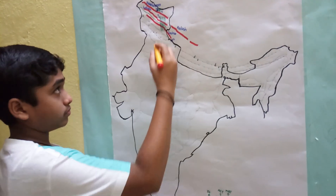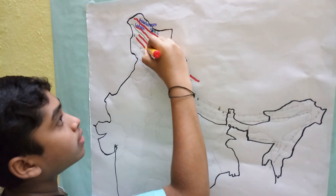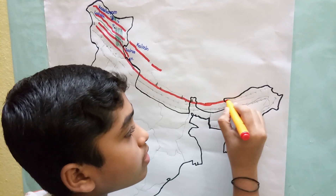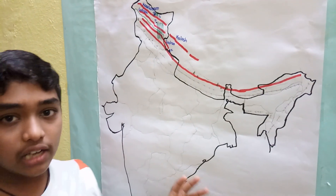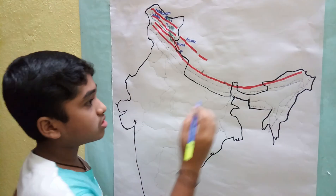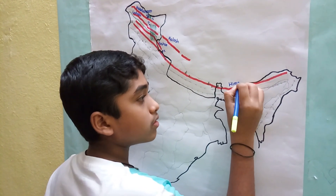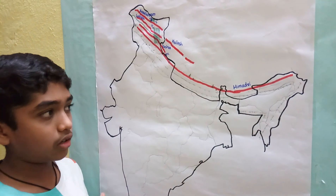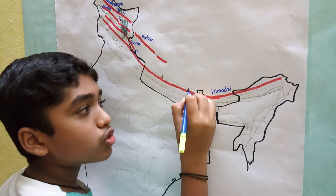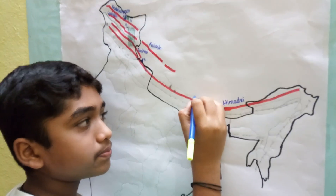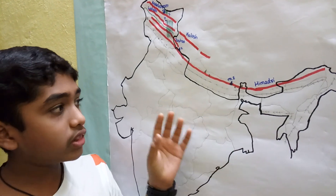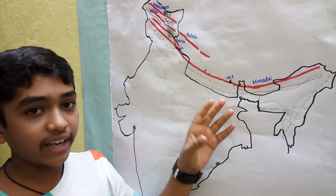Himadri is the highest range in the world and is a chained range with many highest peaks. The first important peak is Mount Everest, the highest peak in the world, with an altitude of 8,848 meters.